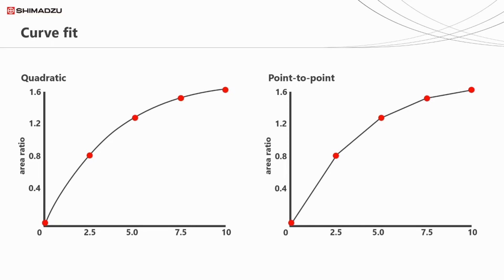In terms of curve fitting parameters, the first is the shape of our curve. In most methods, we use a linear curve — so it's not a curve at all. But we can also have an actual curve, such as a quadratic curve, which is common in specific applications or with detectors like the FPD when quantifying sulfur. Other curve fits are also possible, such as point-to-point, although these are less commonly used.